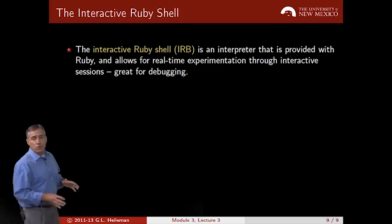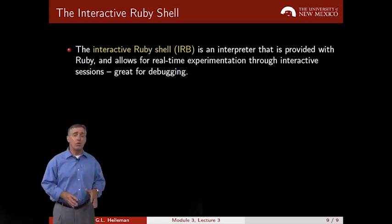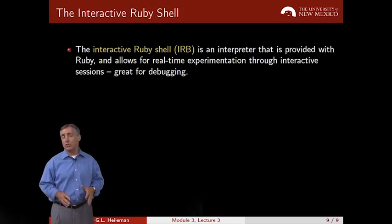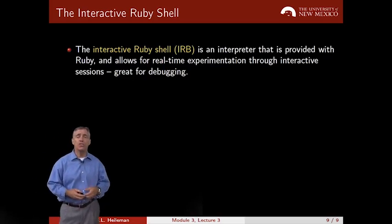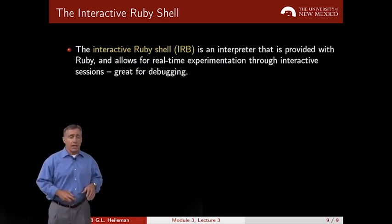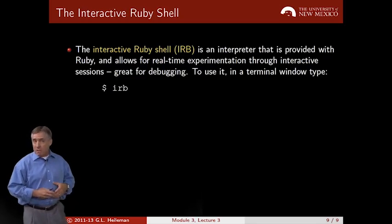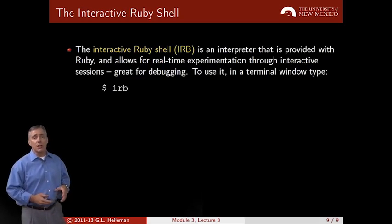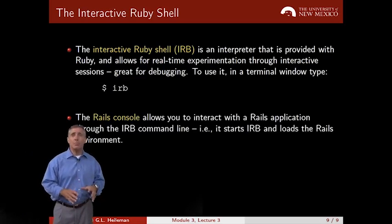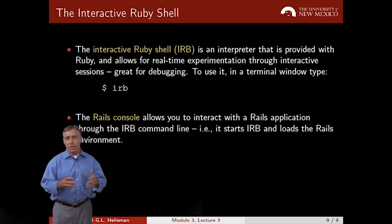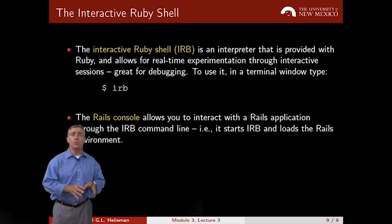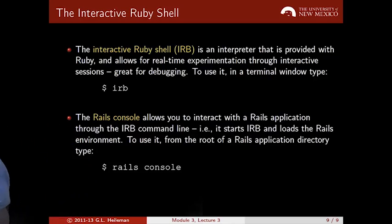The interactive Ruby shell, IRB, is an interpreter provided in Ruby. It's a great technique for debugging Ruby applications — you can open up the Ruby shell and inspect an application using the command line by typing IRB within a terminal window. Rails console is IRB, but it preloads your Rails environment as well. You can inspect a Rails application directly through the terminal using Rails console by typing 'rails console' within the root directory of your Rails application.